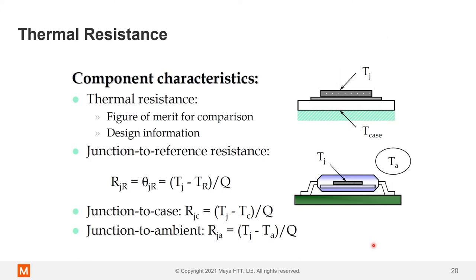The concept of thermal resistance as applied to packages is straightforward. Junction-to-reference thermal resistance equals delta T divided by the power supplied to the device, measured in degrees C per watt. You can define junction-to-ambient, junction-to-case, or junction-to-board thermal resistances — each serves different purposes in thermal calculations. For example, junction-to-ambient is simply the junction temperature minus ambient temperature divided by power supplied.